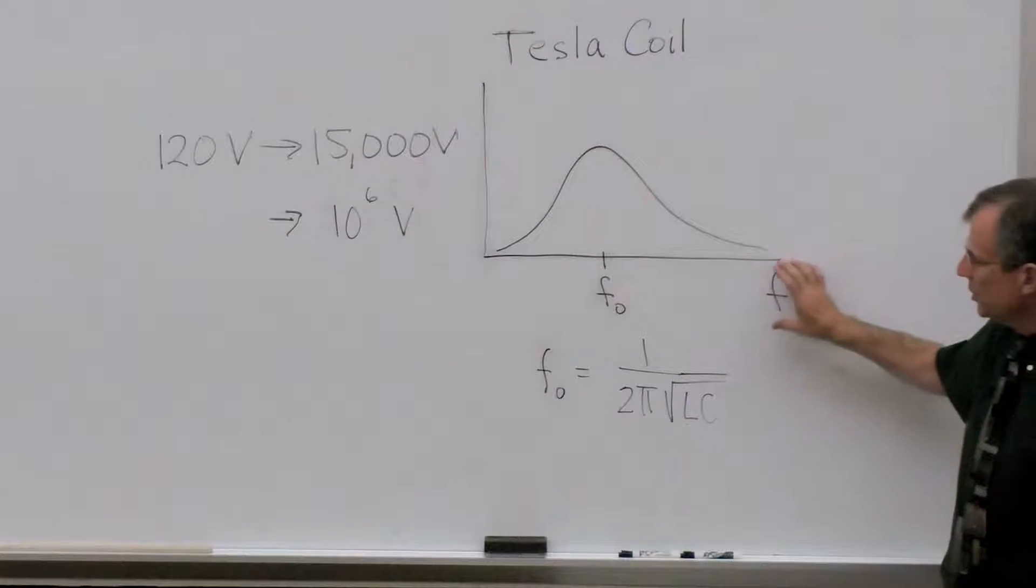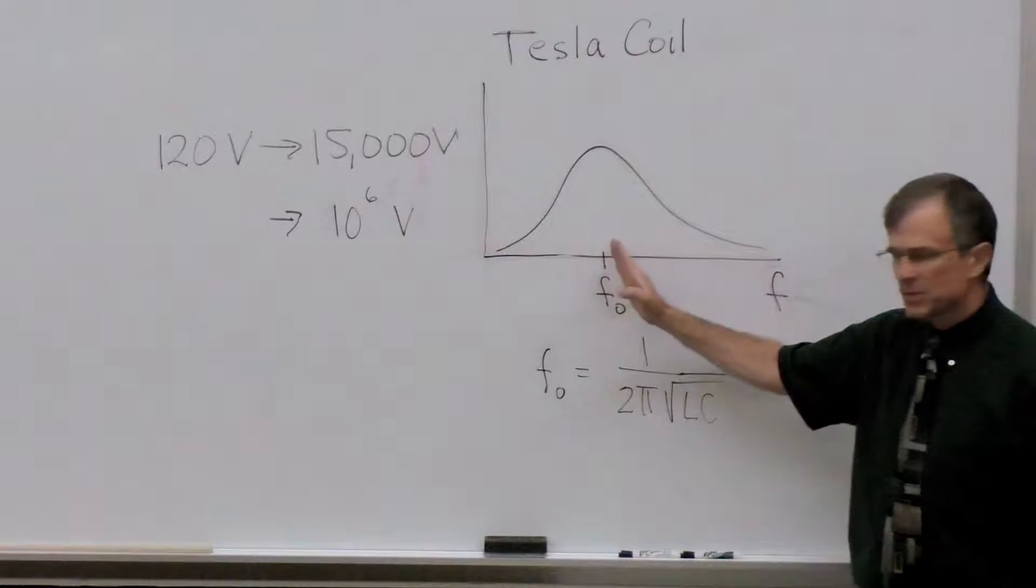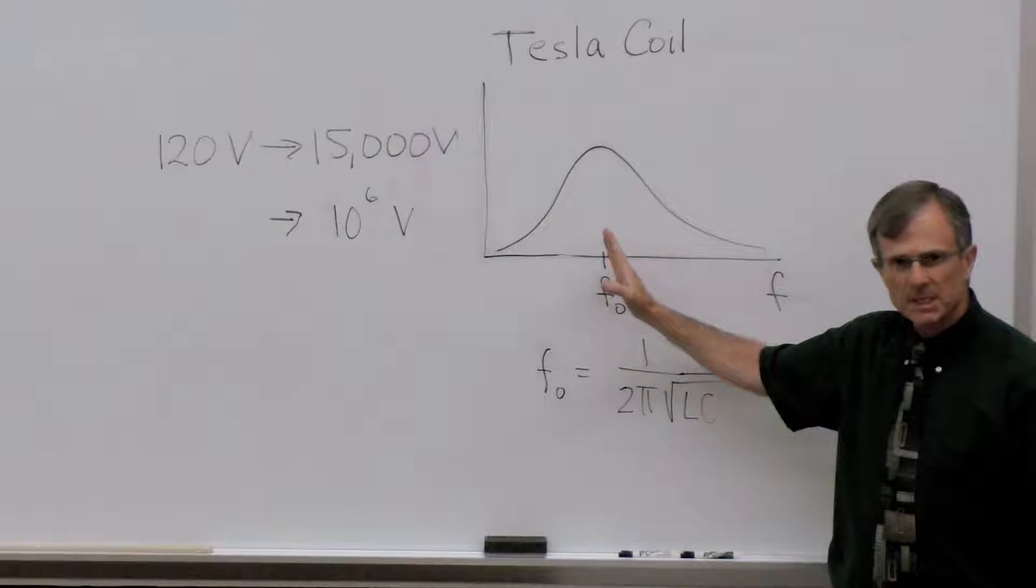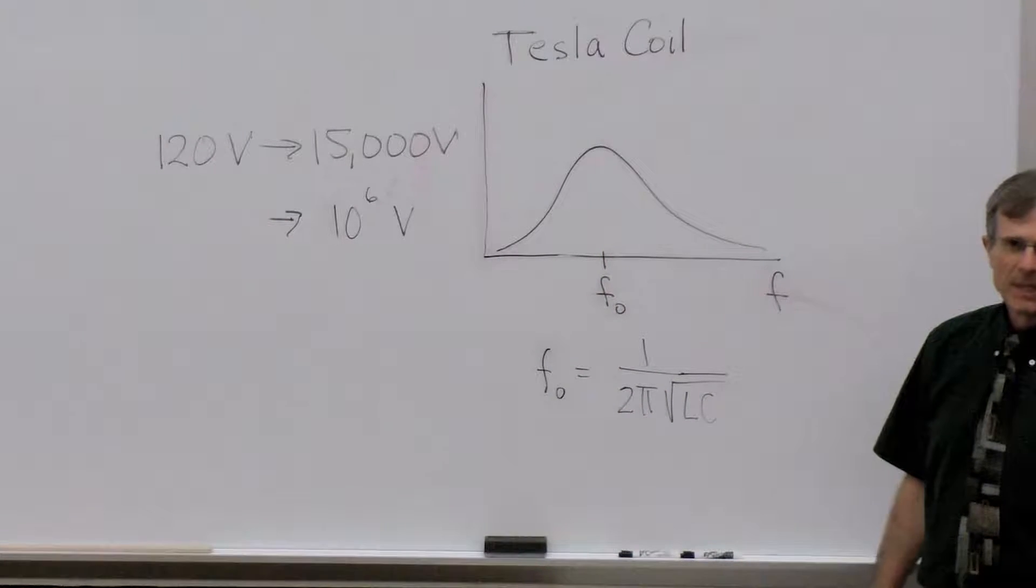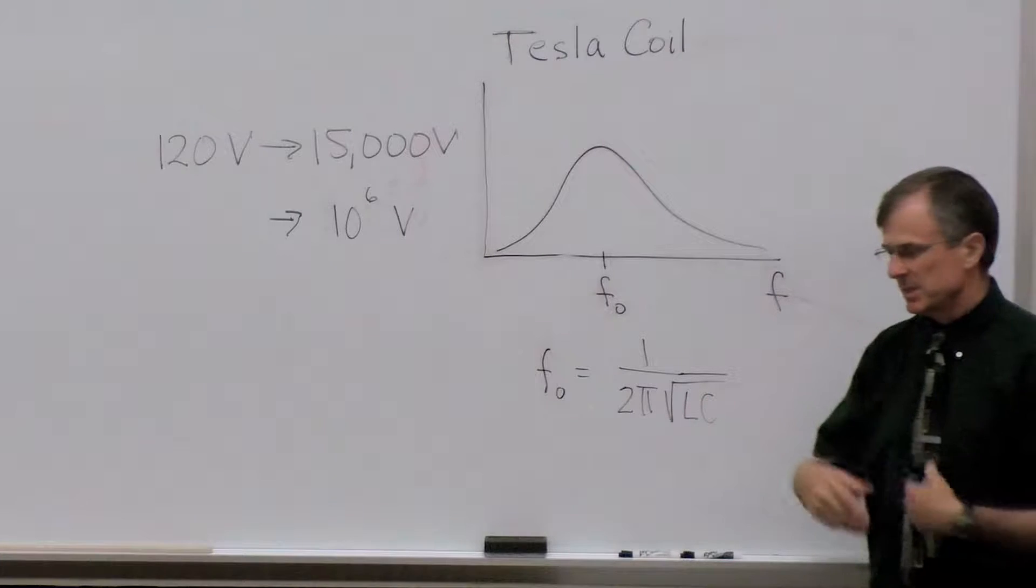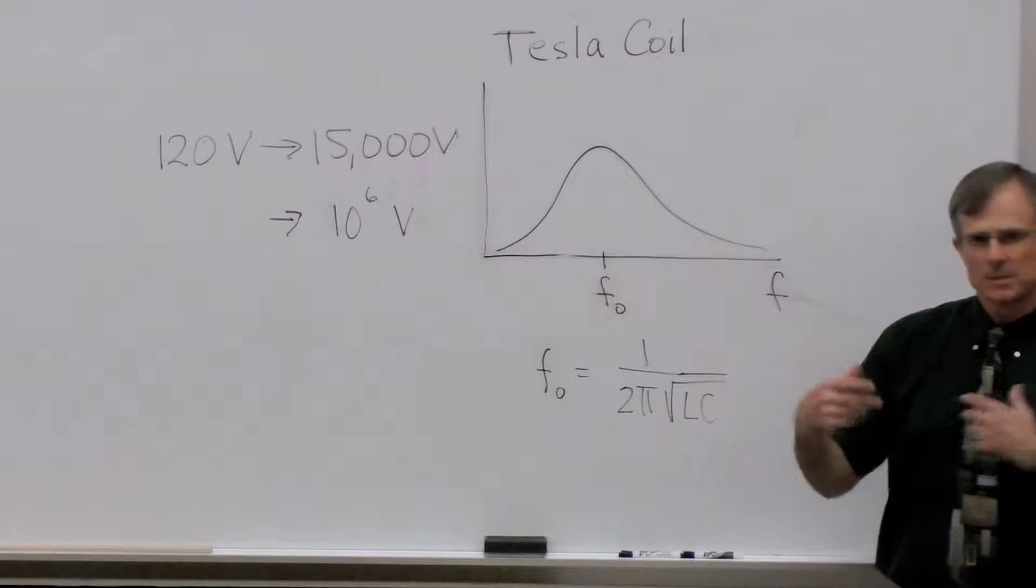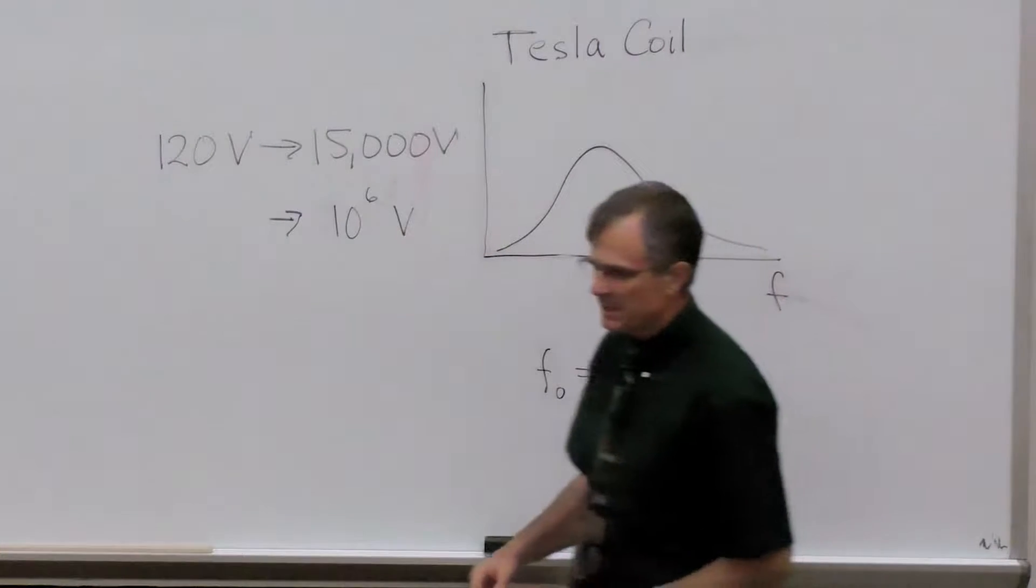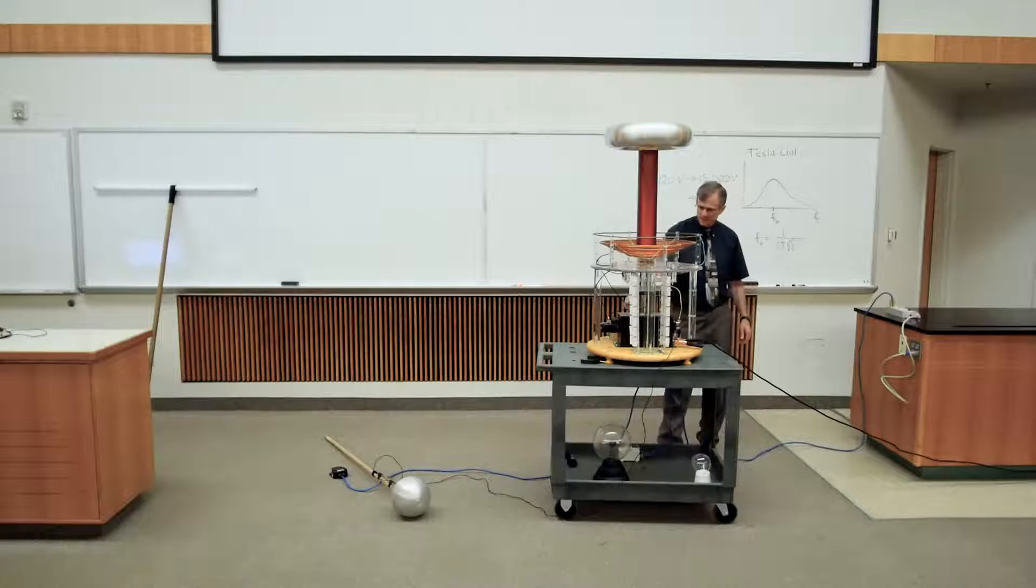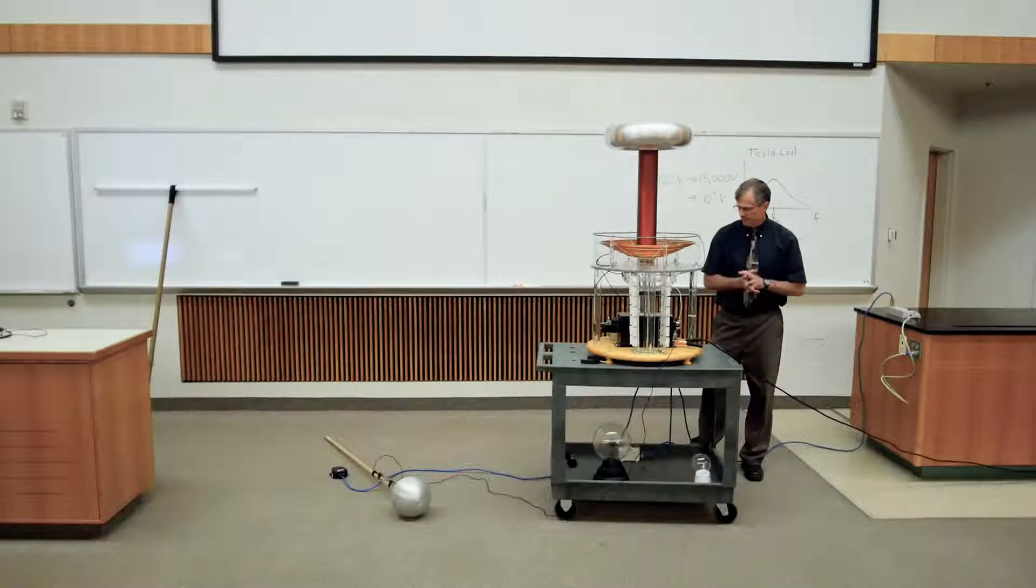And so what we'll do is we'll tune the frequency until it matches this resonant frequency of the Tesla coils to get the maximum amplitude of the resonance. This is just the way a radio works. At the heart of a radio is an LC circuit. And we'll be tuning the frequency, the speed at which this disk spins, to maximize that current.